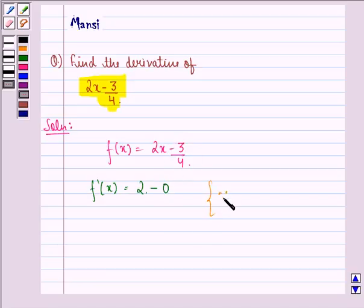Because we see that derivative of a constant is 0 and d by dx of x raised to power n is equal to n into x raised to power n minus 1.